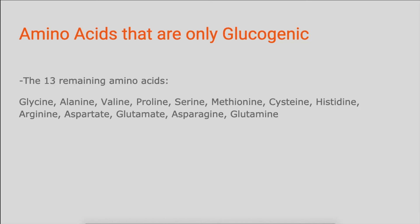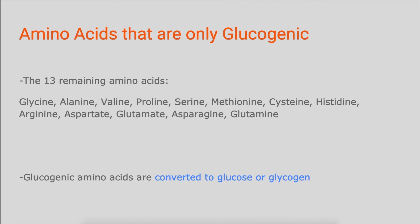Moving on to the amino acids that are only glucogenic, you can just remember that these are going to be the remaining amino acids. So as long as you're able to remember the mnemonics for the ketogenic and the ketogenic-and-glucogenic categories, you'll be able to recall the amino acids that are only glucogenic. Another important thing to know is that glucogenic amino acids are converted to glucose or glycogen.